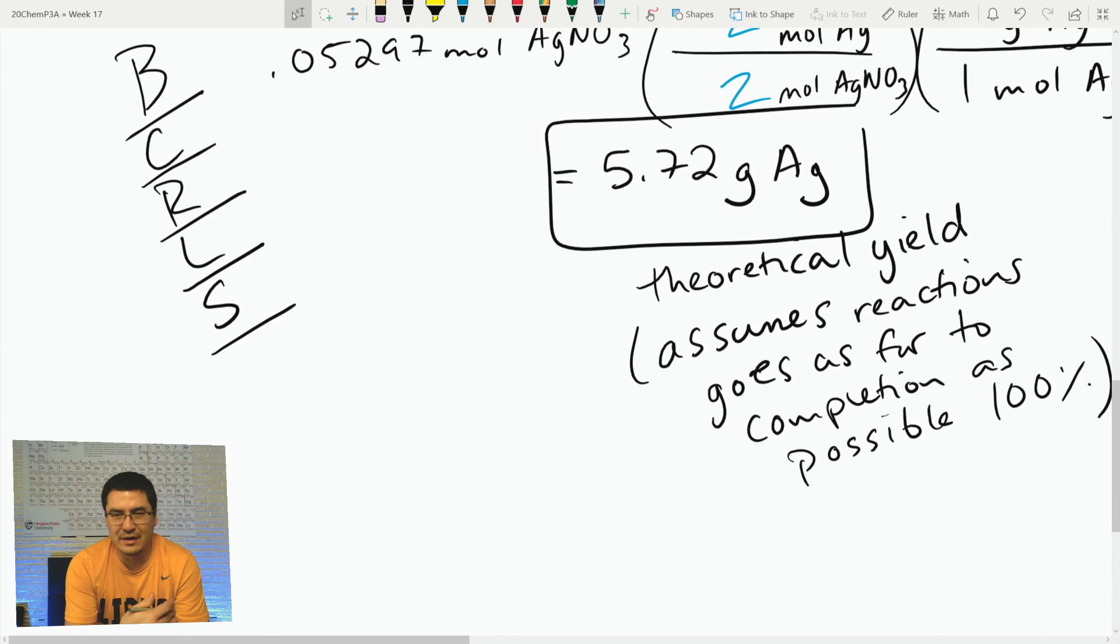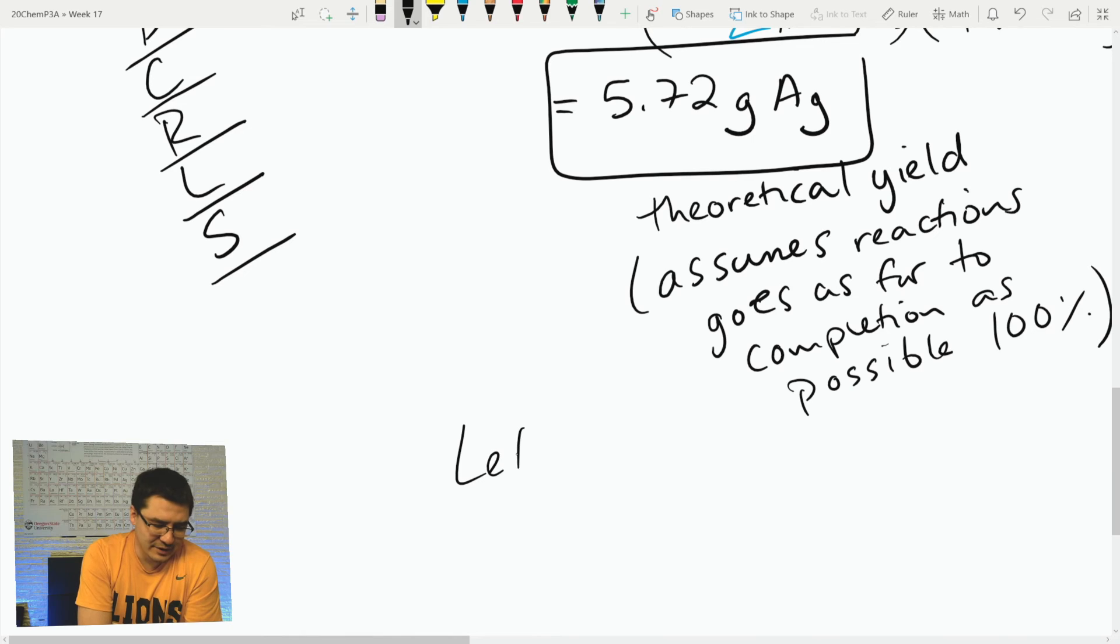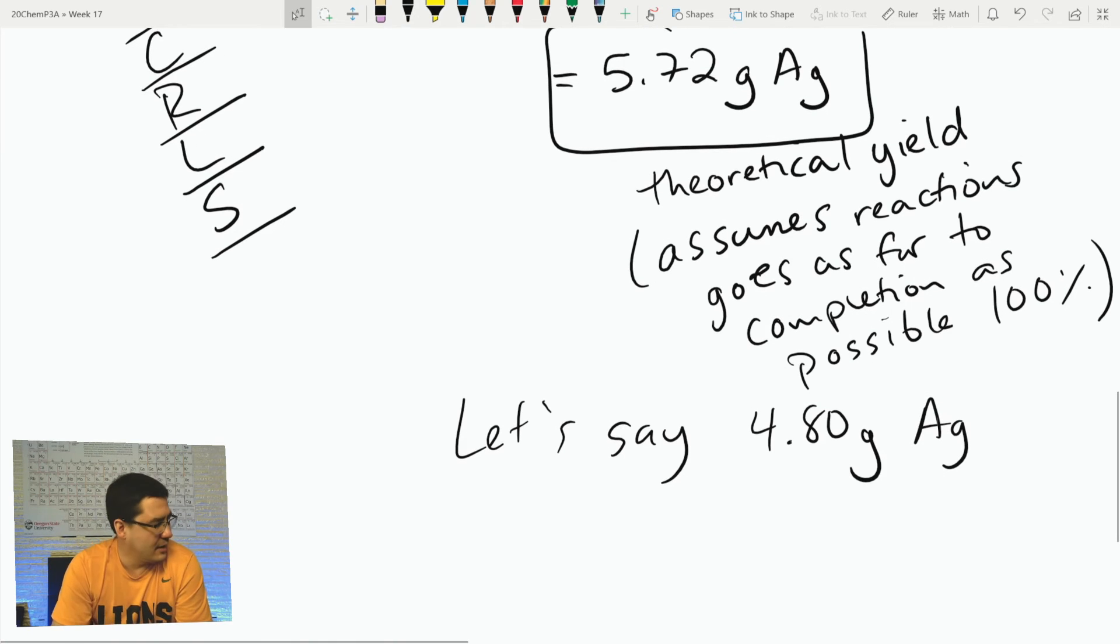I could go do this experiment. If I run it and filter out and collect my silver, and let's say I only get 4.80 grams of silver. Obviously my reaction didn't go as planned. I either spilled some, lost some on some filter paper, the reaction for thermodynamic purposes - the molecules didn't find each other and I still have some silver dissolved in solution, or just for varying reasons you're never going to get 100% yield. It would be great if you could, but you can't.